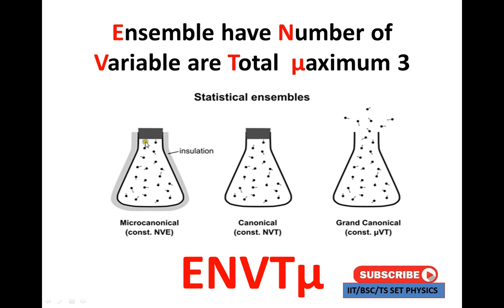Next is the canonical ensemble. In a normal flask, there are particles. Here Q, T, and E are the relevant quantities — these are closed walls. Particles are present, and temperature T is constant. This is the canonical ensemble.